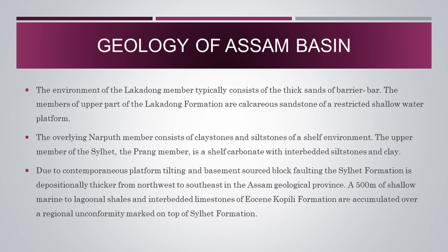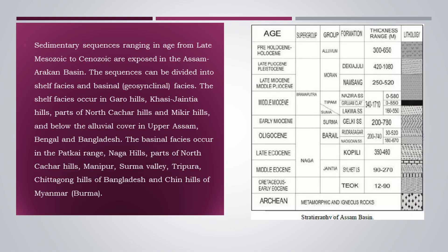The environment of the Lakadung member typically consists of thick sands of barrier bar. The upper part of the Lakadung formation comprises calcareous sandstone of a restricted shallow water platform. The overlying Narpur member consists of claystones and siltstones of a shelf environment. The upper member of the Silet, the Prong member, is a shelf carbonate with interbedded siltstones and clay. Due to contemporaneous platform tilting and basement-sourced block faulting, the Silet formation is depositionally thicker from northwest to southeast. A 500 meters of shallow marine to lagoonal shales and interbedded limestones of the Eocene Coppili formation accumulated over a regional unconformity on top of the Silet formation. This figure shows the stratigraphy of Assam Basin, where sedimentary sequences ranging in age from Late Mesozoic to Cenozoic are exposed. The sequences can be divided into shelf facies and basinal geosynclinal facies.